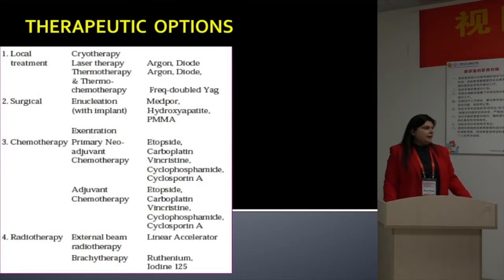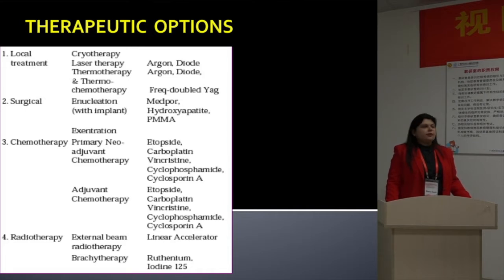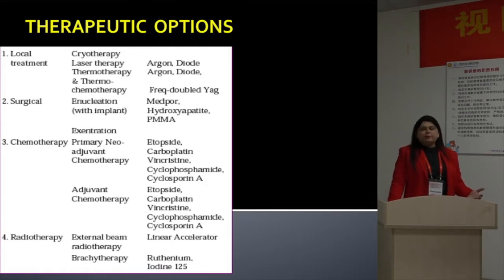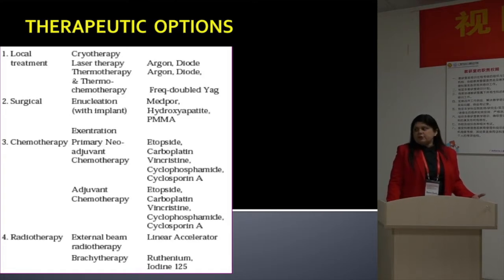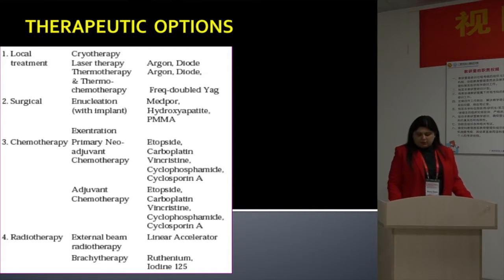We have so many therapeutic options for retinoblastoma: local treatment, surgical treatment, chemotherapy, and radiotherapy. As far as chemotherapy is concerned, it can be used as primary chemotherapy for chemoreduction, or as adjuvant chemotherapy in cases of high-risk histopathological features, or as neoadjuvant chemotherapy in all cases of extraocular retinoblastoma.